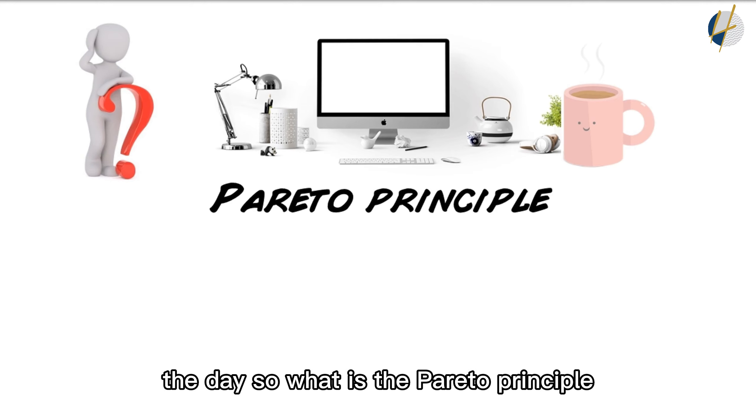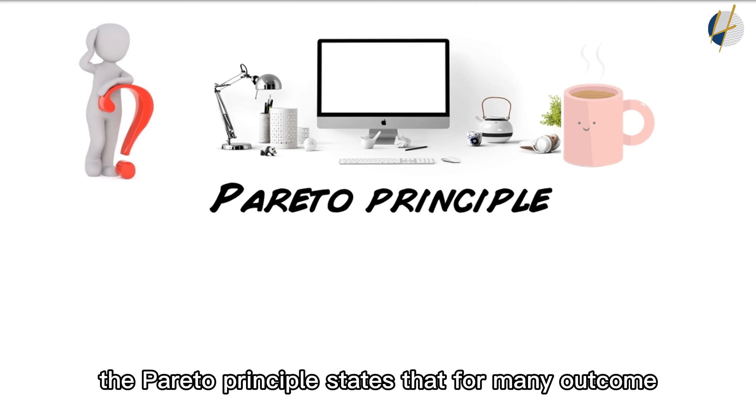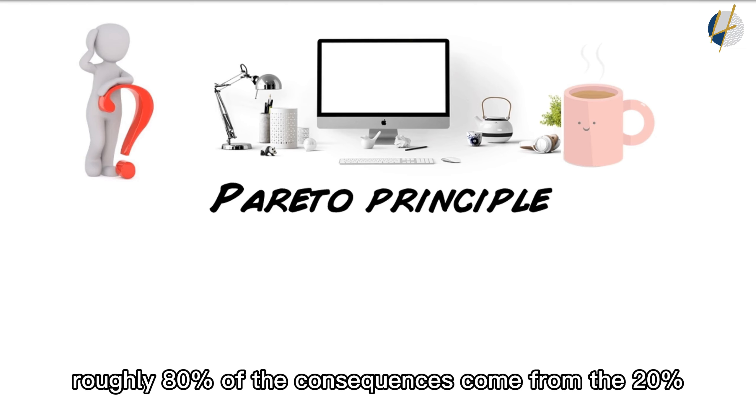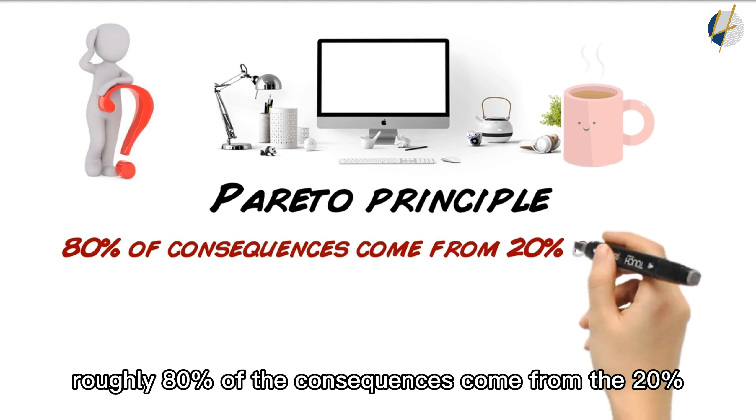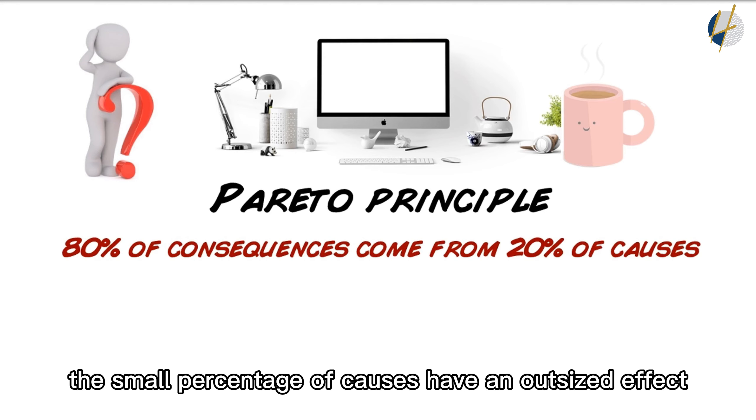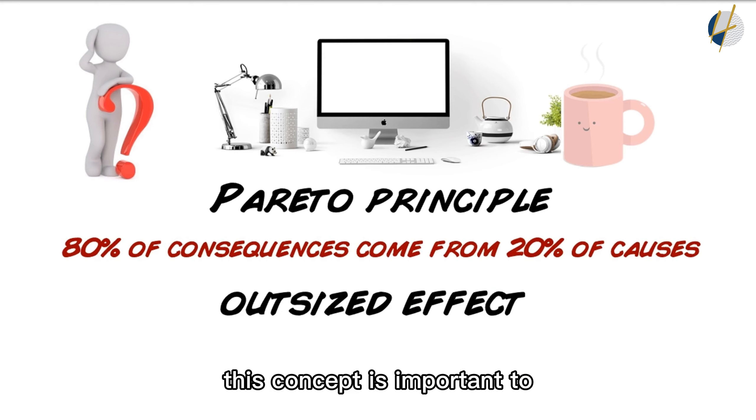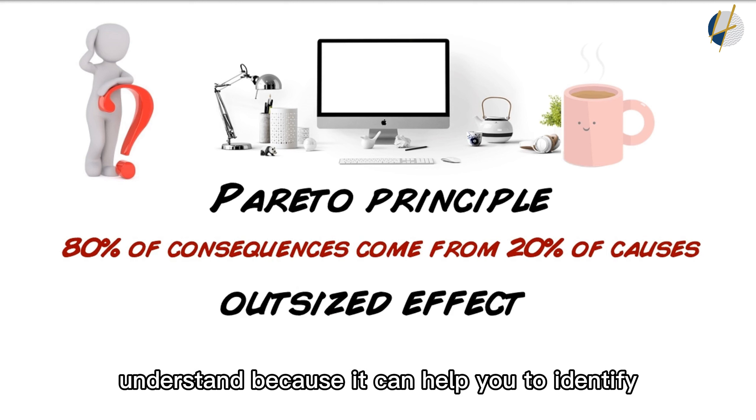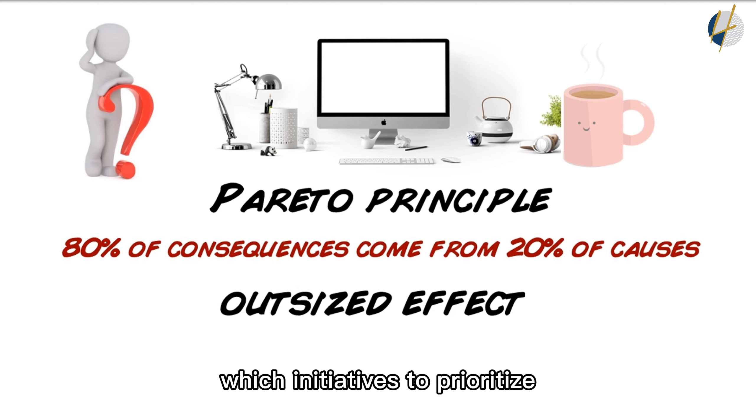So what is the Pareto Principle? The Pareto Principle states that for many outcomes, roughly 80% of the consequences come from 20% of the causes. In other words, a small percentage of causes have an outsized effect. This concept is important to understand because it can help you identify which initiatives to prioritize so you can make the most impact.